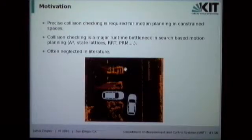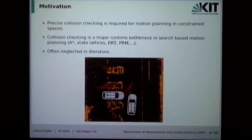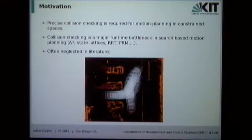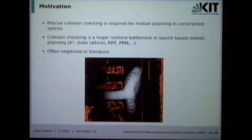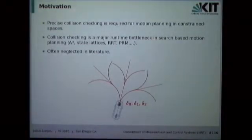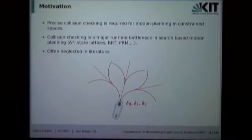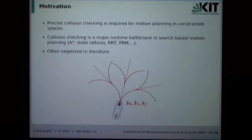Solving this problem is important if you come from motion planning. Consider a parking maneuver where a vehicle has to maneuver forward and backward — collision checking must be very precise since the vehicle comes very close to the obstacles. On the other hand, it must be very fast, since all motion planning strategies for these scenarios are search-based and expand a search tree. Each node must be checked for collision, and it's not unusual to check millions of collisions during one simple motion planning query.